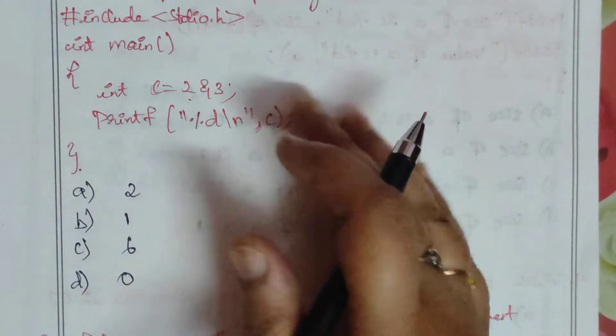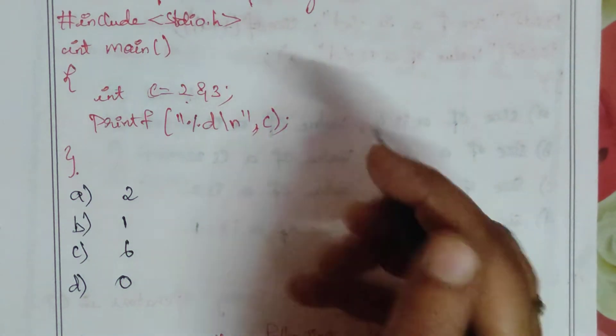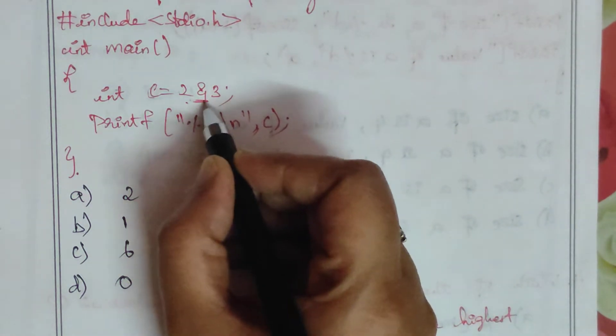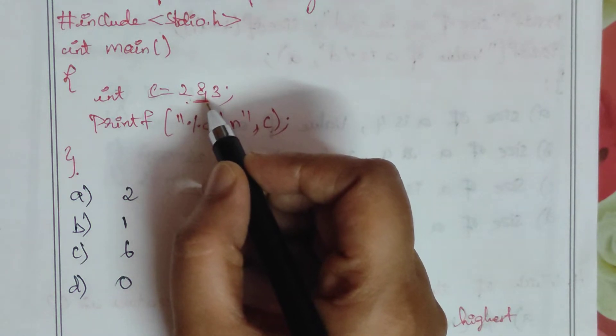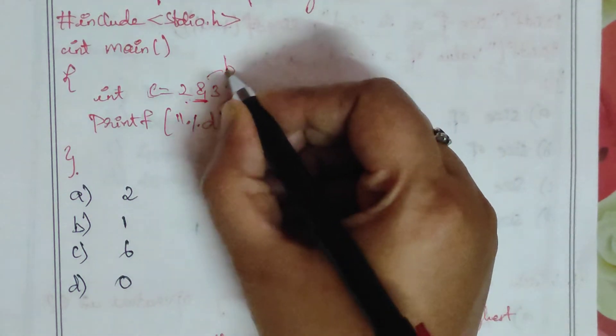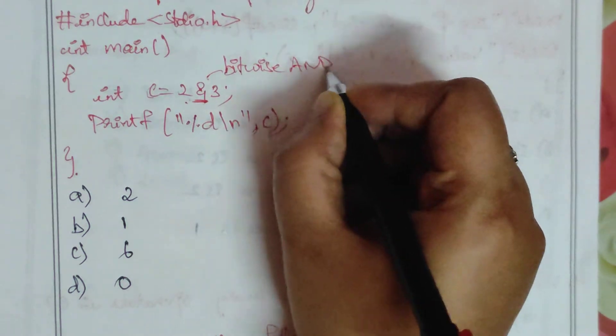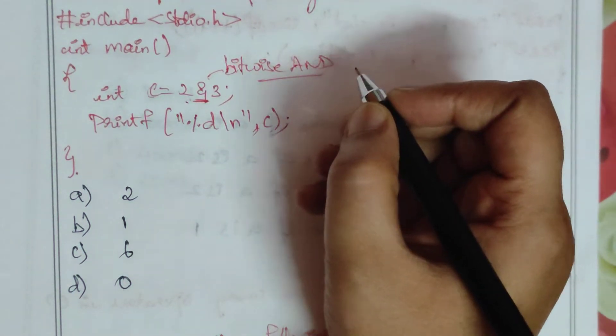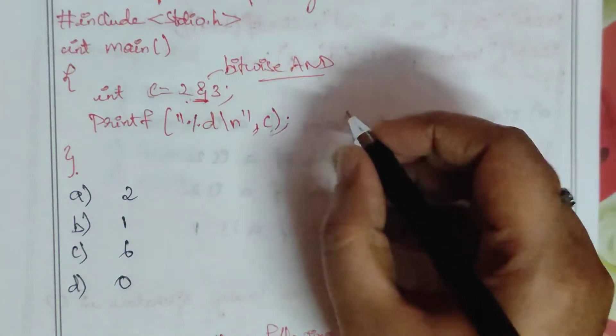These are the options: 2, 1, 6, and 0. Now we are going to print the result. This is the bitwise AND operation. The bitwise AND operation performs at binary level.